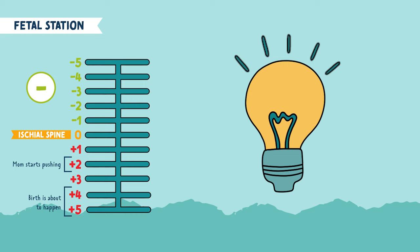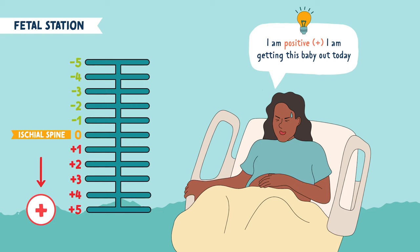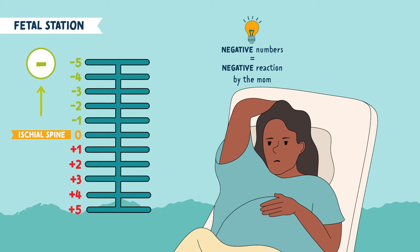Here's a memory trick to help you remember the positive and negative numbers. If you see positive numbers, you're getting closer to the exit — I like to think of this as the mom saying, 'I am positive, I am getting this baby out today.' And if the baby is in negative numbers, it's a negative thing, because the baby is not ready to exit and be pushed out, and the mom is sad and exhausted and ready to get the baby out.